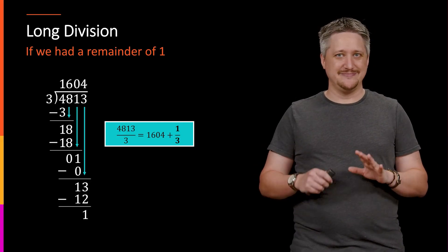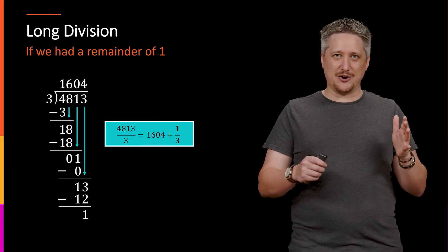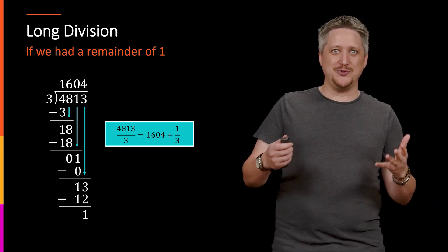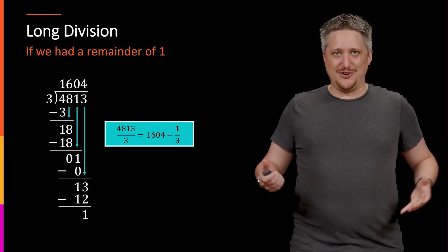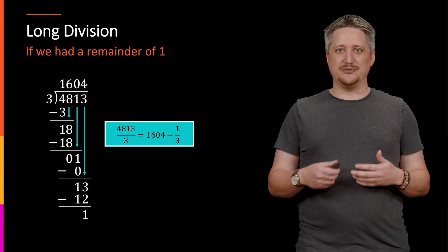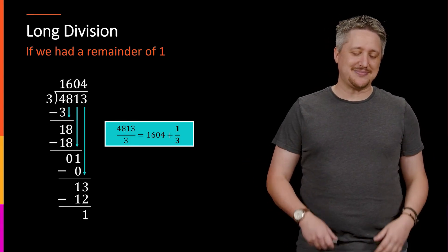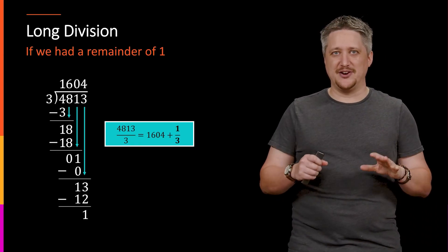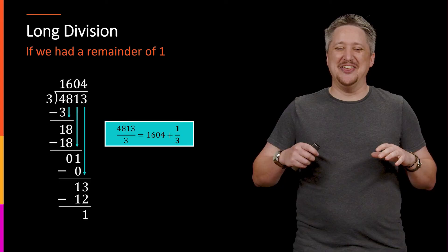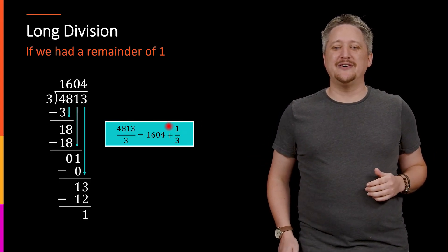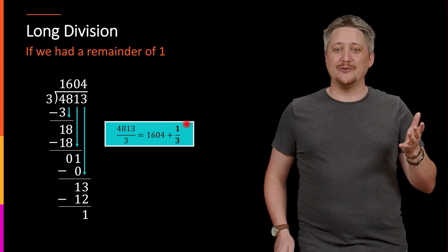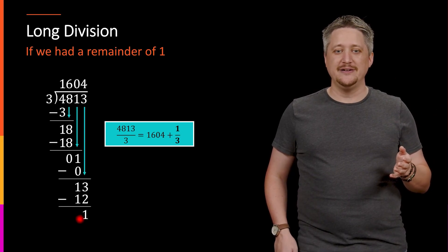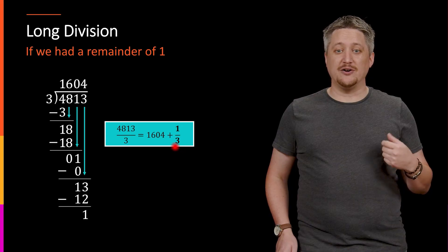So 1604 plus 1 over 3. Mixed numbers are for certain archaic applications of where numbers are used, like baking ratios and things. They're not for standard number usage. So the thing I want to get away from the soapbox, sorry.